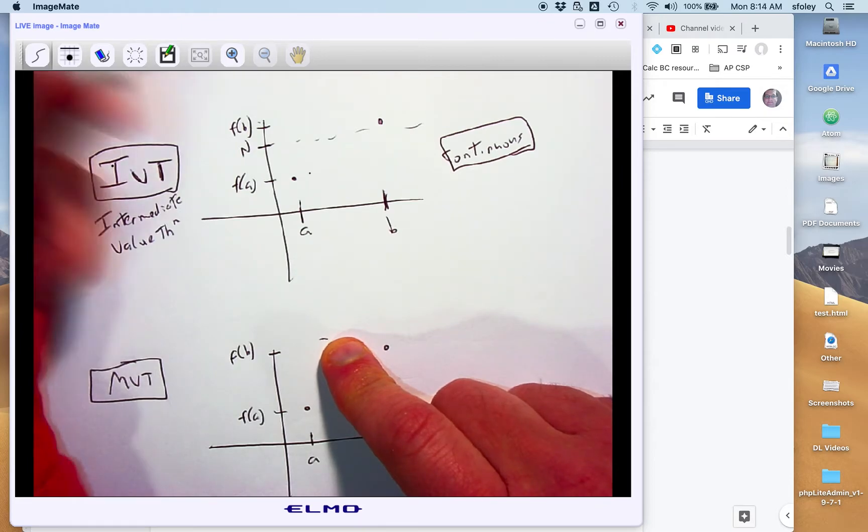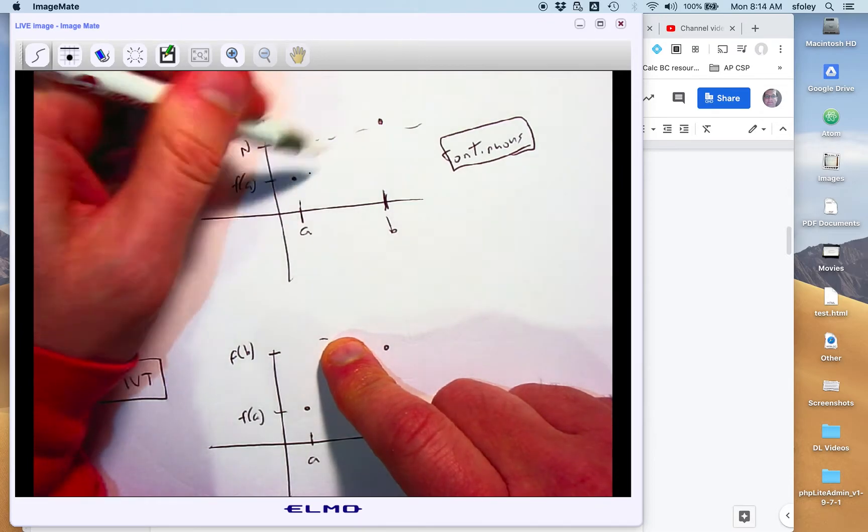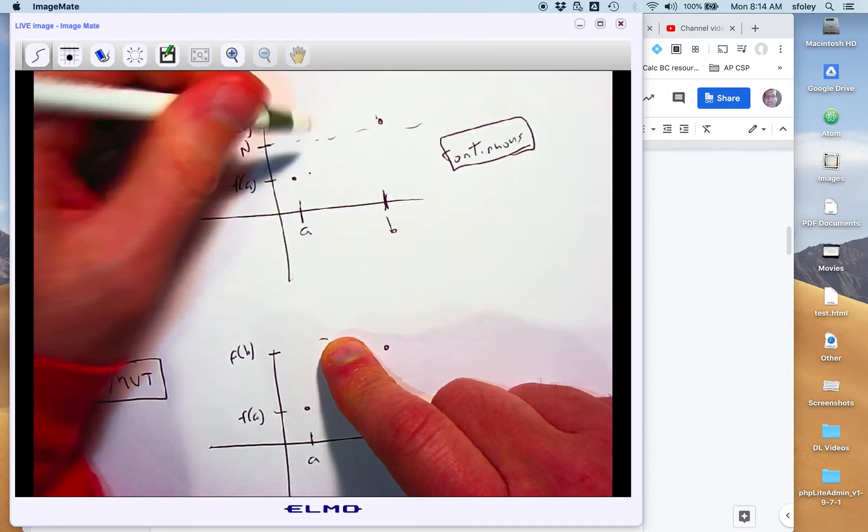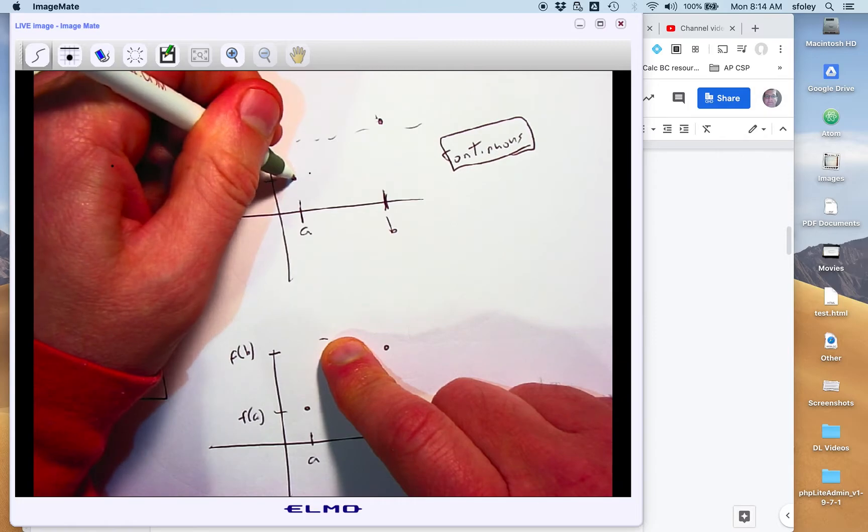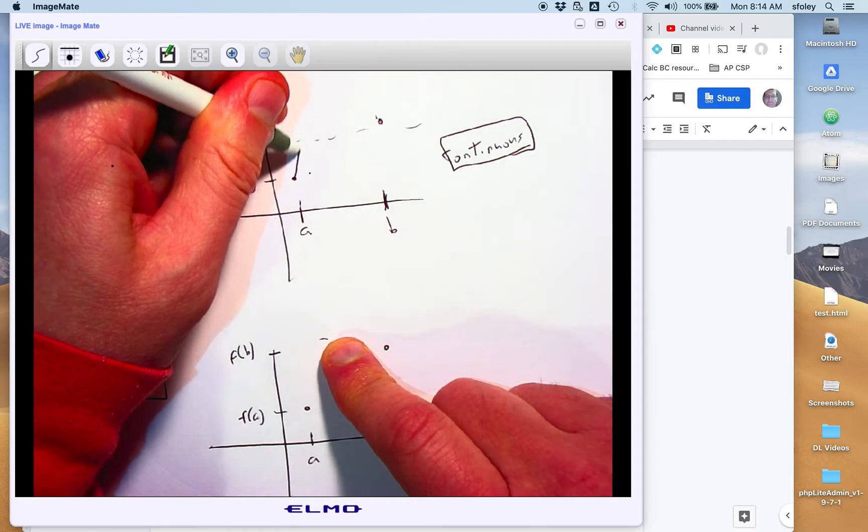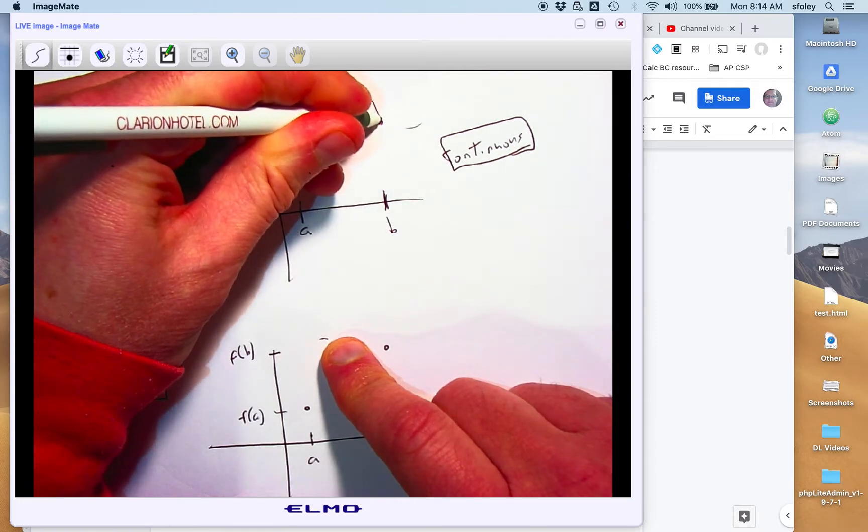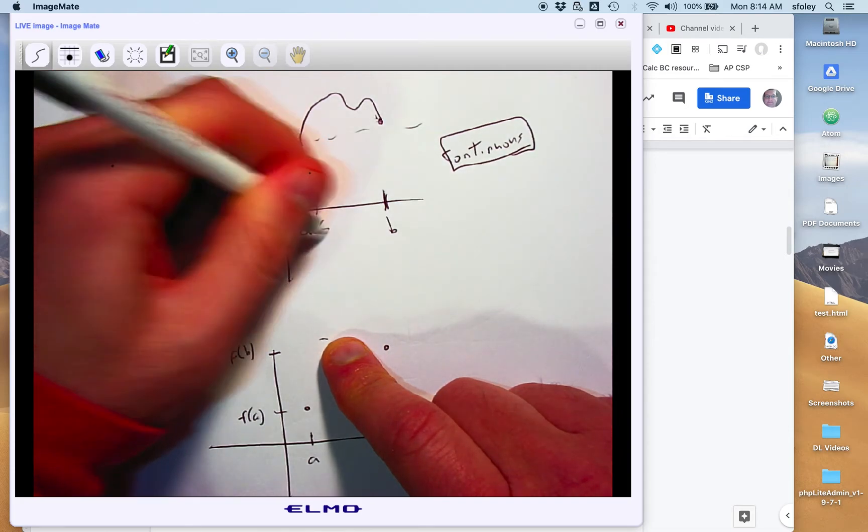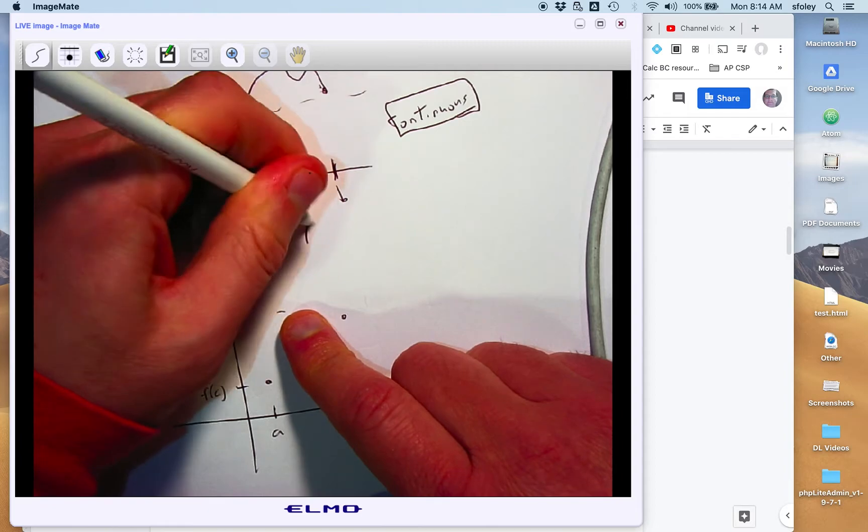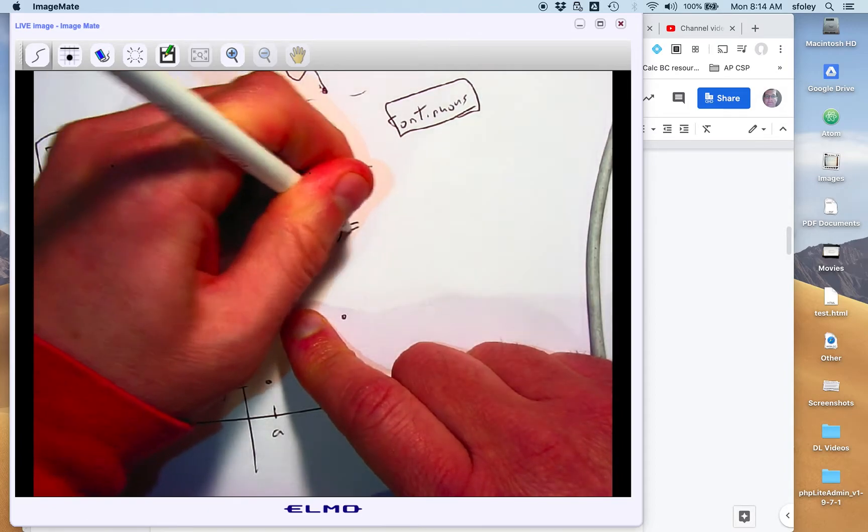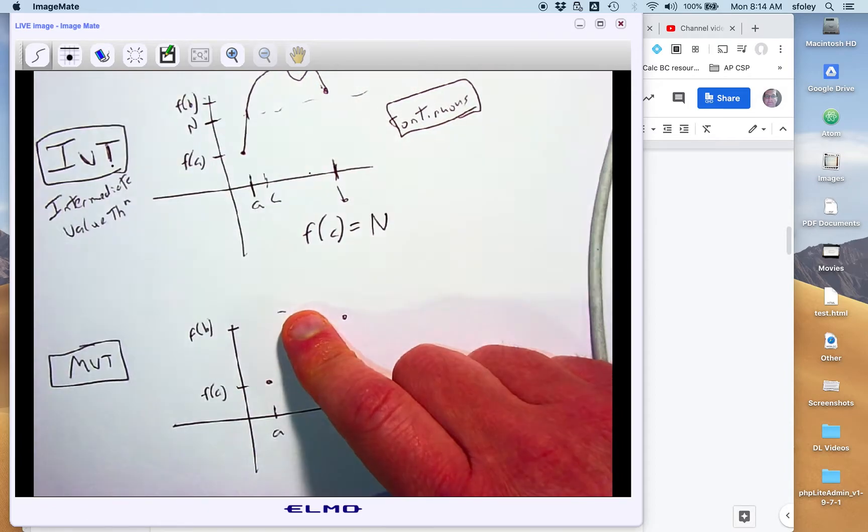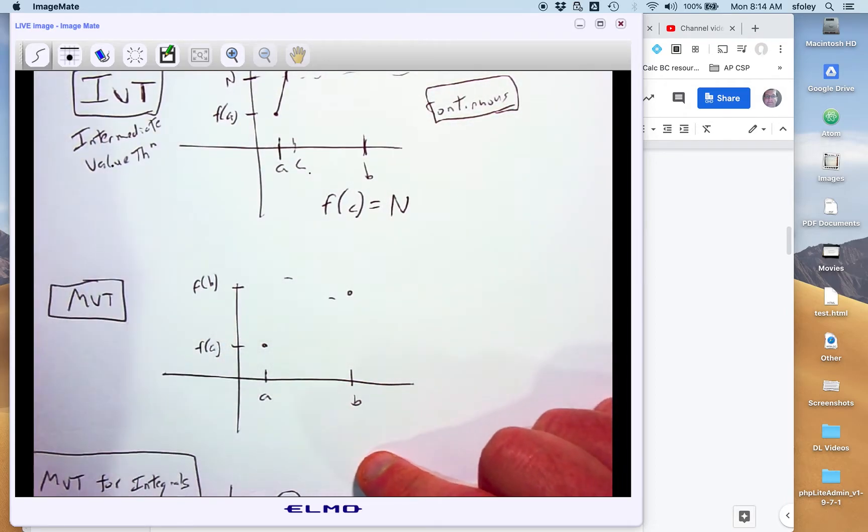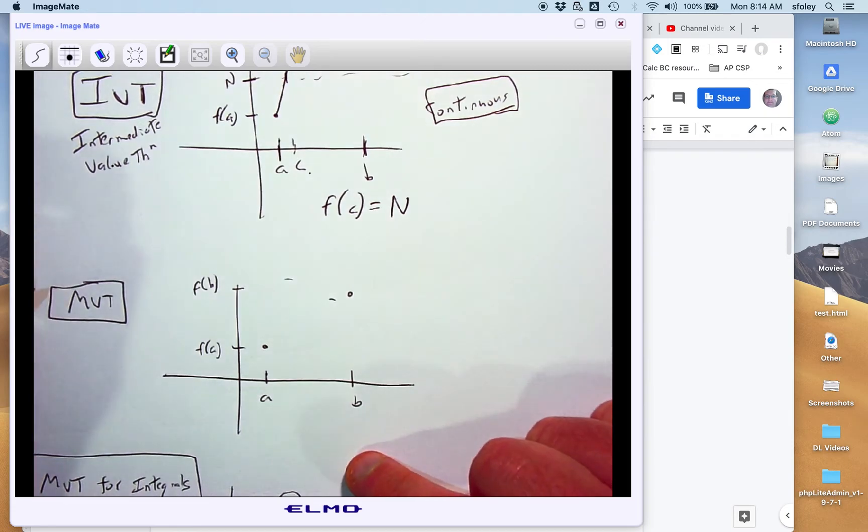And so that makes sense. If the graph's continuous, you're going from this dot to this dot without picking up your pen. You're going to have to cross that dash line at least once. And maybe more than once. It's called an existence theorem. It doesn't really tell you where it is, it just tells you that it exists, and so it's often called C. And so we know that there is a C such that F of C equals N, as long as that target that I pick is between those two y values.